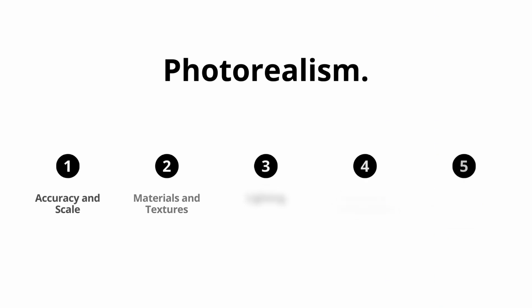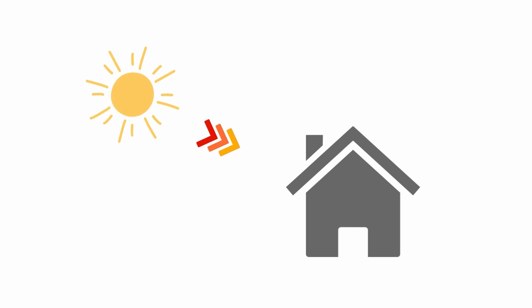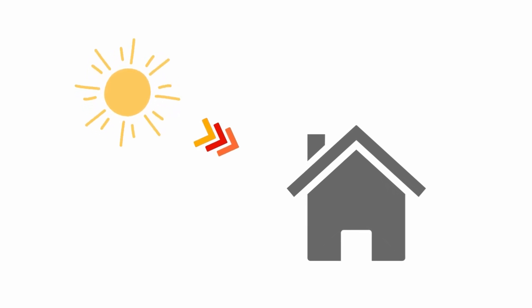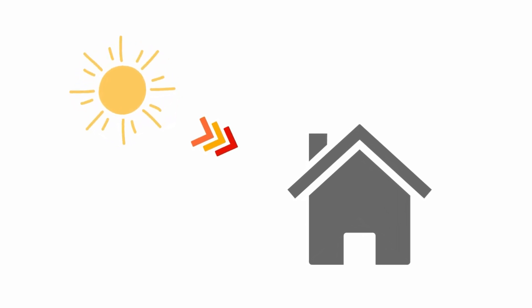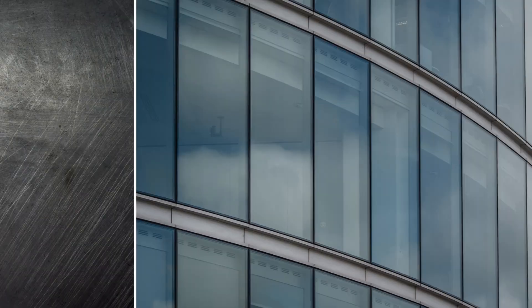Step 2 is using physically based rendering materials, which is essential to achieving photorealism in Blender. These materials simulate how light interacts with surfaces in the real world, providing a more accurate representation of different materials like wood, metal, glass, and concrete. Understanding the principles of PBR will greatly increase the quality of your materials.